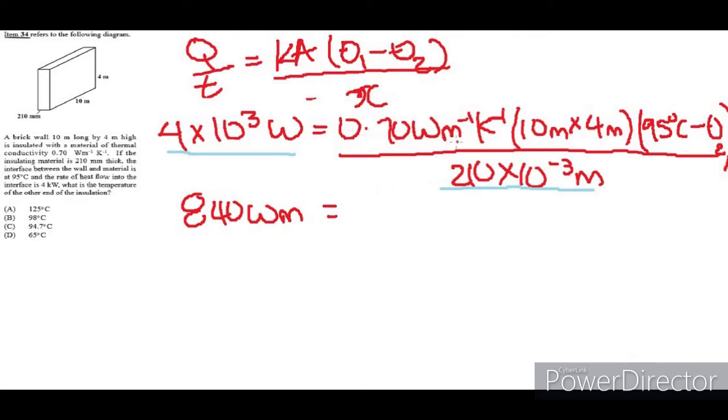That's equal to 0.70 watt per meter per kelvin, multiplied by 10 times 4, which is 40 meters squared. That should give 0.70 watt per meter. One per meter will cancel, the meter here, so it would have meter instead of meter squared per kelvin still remains. And that would be multiplied by 95 degrees Celsius minus theta 2.